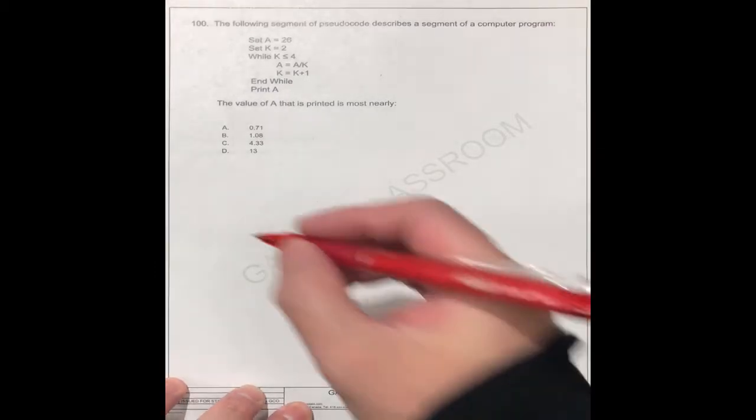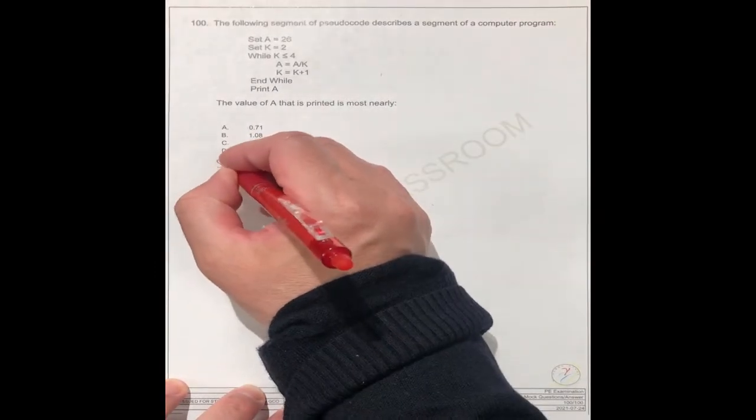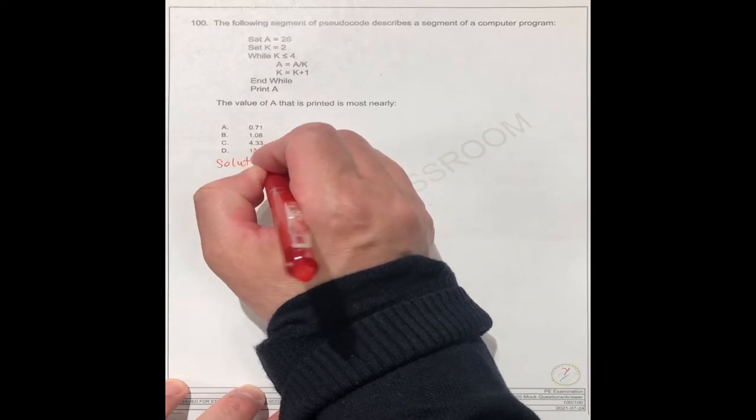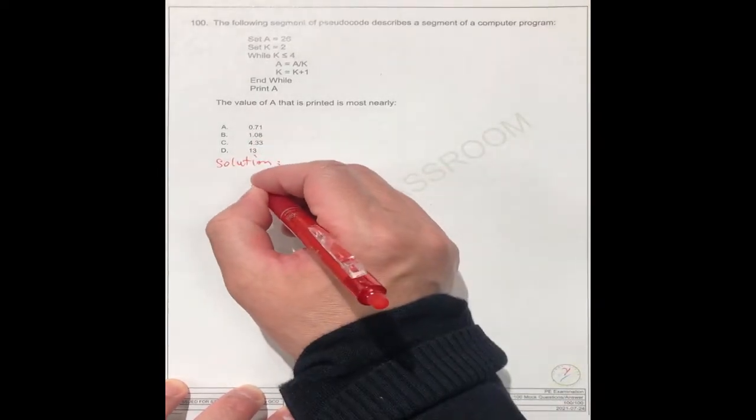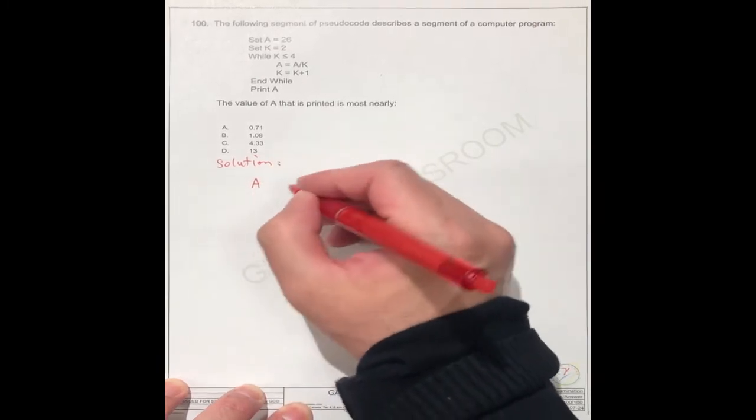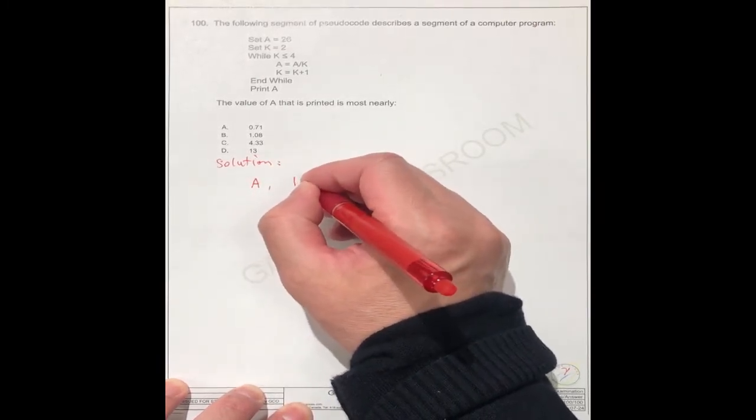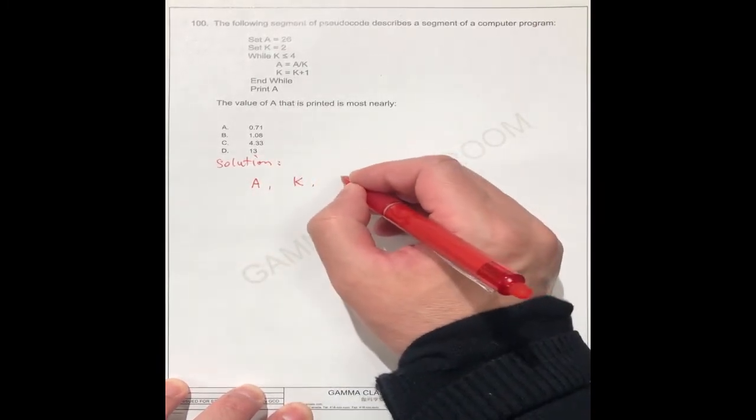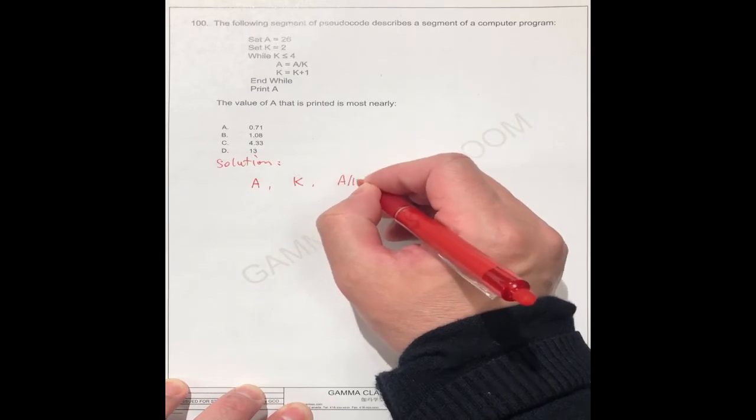So for the solution, we can write down here: number a, number k, number a divided by k.